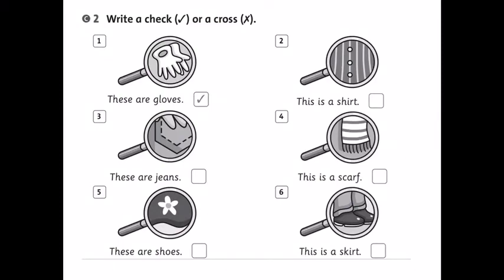Con nhìn vào ví dụ đầu tiên. Bạn nhìn vào hình. What are these? Đó là cái gì vậy con? These are gloves. Đúng rồi. Đó chính là găng tay. Thì ở dòng chữ người ta cho là These are gloves. Chính xác. Nếu vậy thì các con sẽ đánh dấu tick. Được chưa nè?